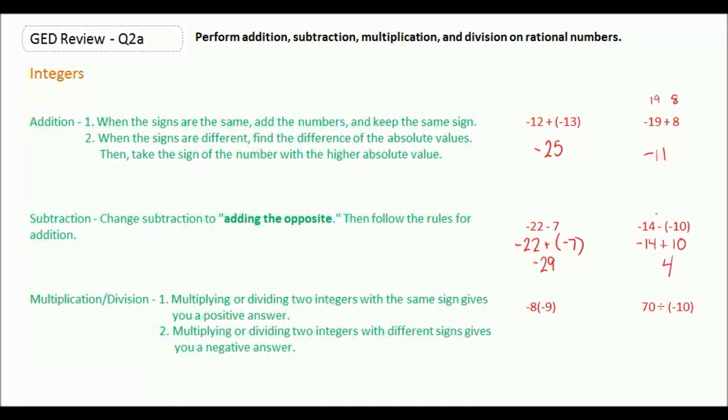And the negative 14 has the higher absolute value, so our answer is negative 4. When multiplying and dividing, if we have two integers with the same sign, whether it's a positive and a positive or negative and a negative, it gives you a positive answer. If you have different signs, it gives you a negative answer.